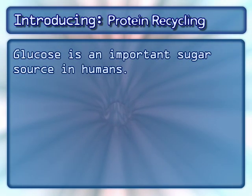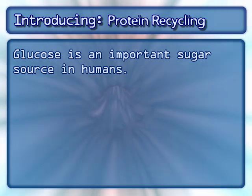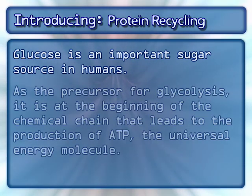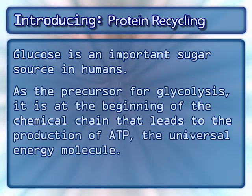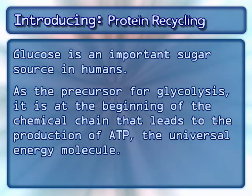Glucose is an important sugar source in humans. As the precursor for glycolysis, it is at the beginning of the chemical chain that leads to the production of ATP, the universal energy molecule.